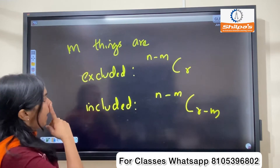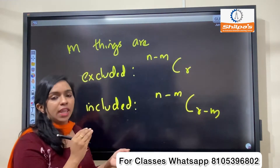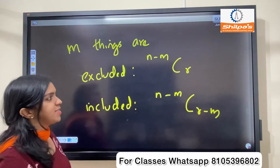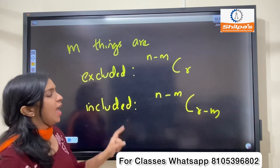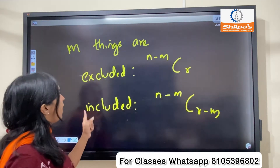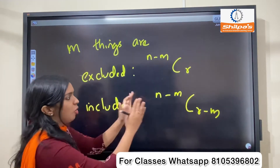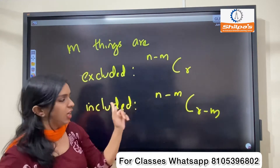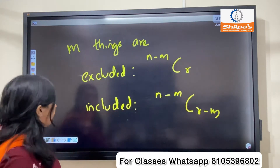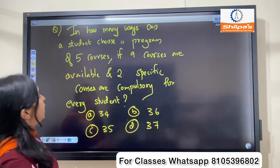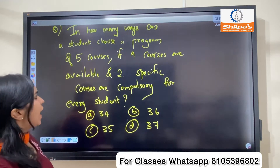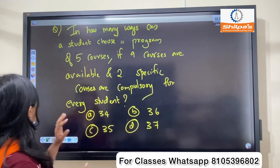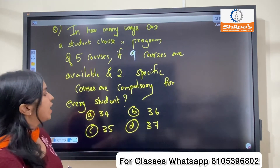In this case, we are looking for m things. That is, m things are excluded. When m things are included. The previous question is: How many ways can a student choose a program of 5 courses if courses are available and 2 specific courses are compulsory for every student?